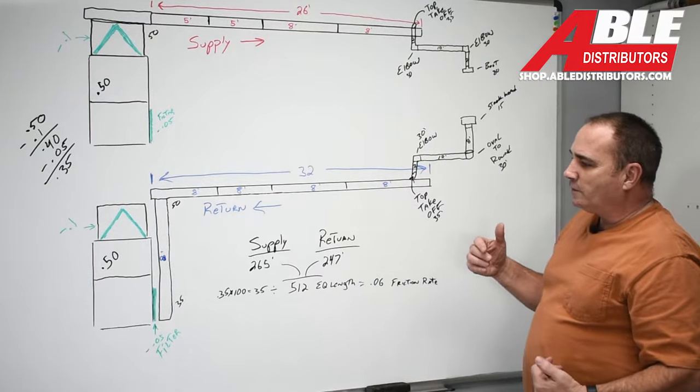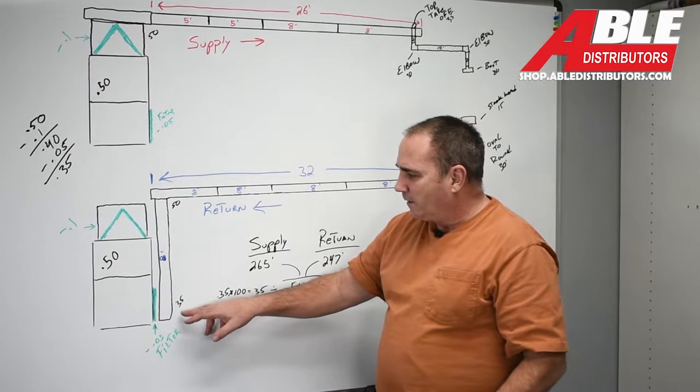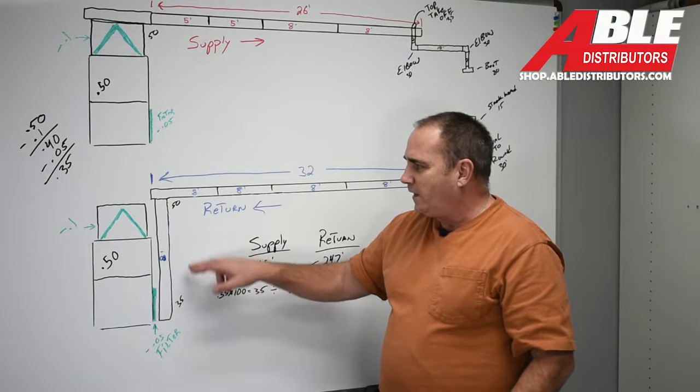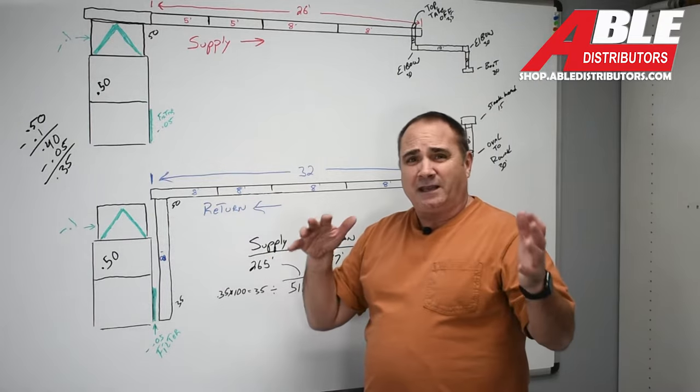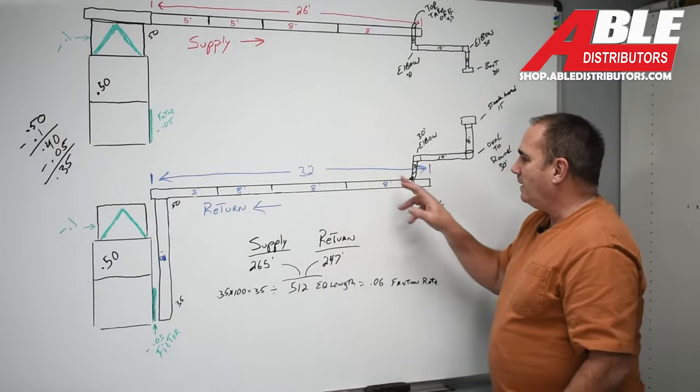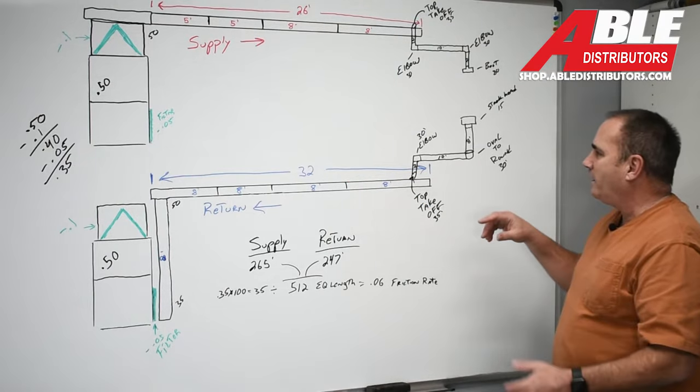On the return, things get a little bit different. We got the drop. That turn into the filter is equivalent to 35 feet. The turn at the top, depending again how it's done, is 50 feet. We've got 8, 8, 8, 8. So that's 32.